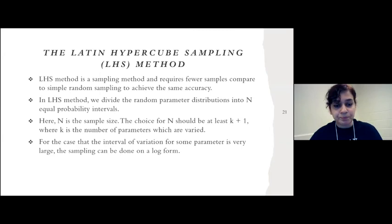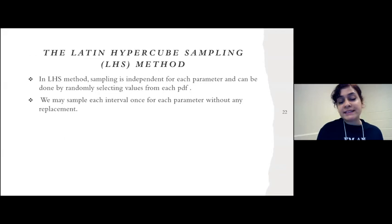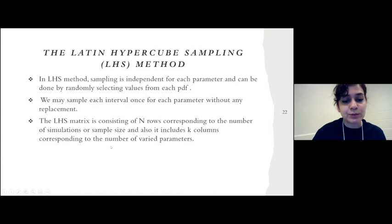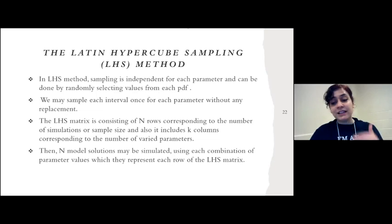If the interval for the parameters is very large, one can use a log form. Sampling is independent for each parameter and can be done by randomly selecting a value from each probability distribution function, sampling each interval once without replacement. The result is an LHS matrix with N rows — the number of simulations — and k columns corresponding to the number of parameters. Finally, N model simulations are run using each combination of parameter values, each representing a row of the LHS matrix.